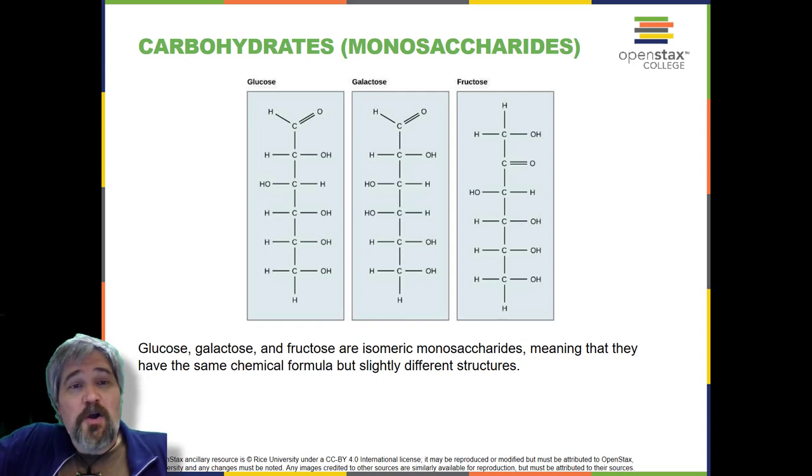Galactose, part of lactose or milk sugar, which is a disaccharide, and fructose, a monosaccharide found in fruit, are other common monosaccharides. Although glucose, galactose, and fructose all have the same chemical formula, C6H12O6, they differ structurally and chemically, and are known as isomers. Because of differing arrangements of atoms in the carbon chain, which is the picture that is still pictured here.